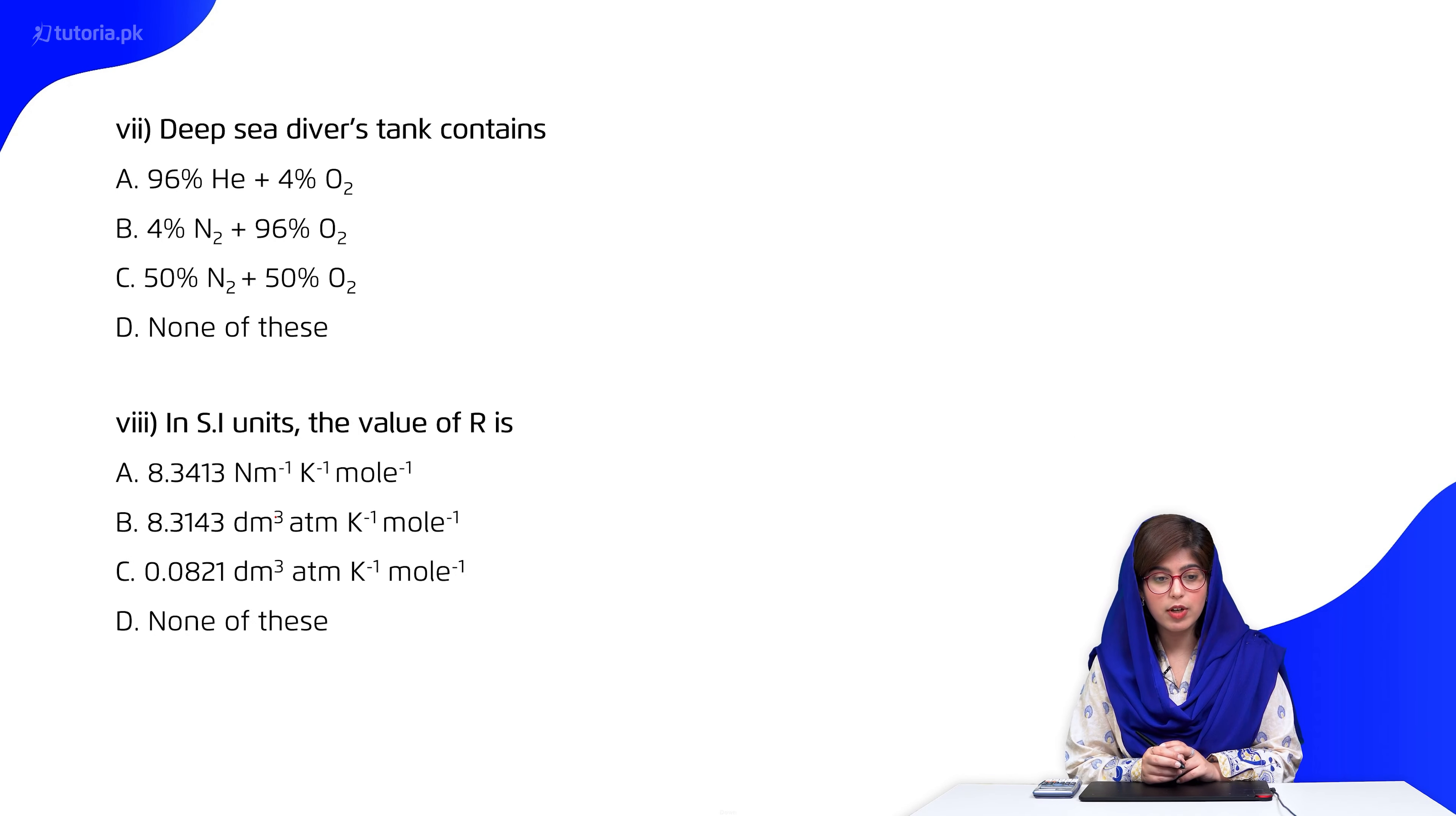Then students, moving forward, number 7. Deep sea diver's tank contains: A 96% helium plus 4% oxygen, B 4% nitrogen plus 96% oxygen, C 50% nitrogen and 50% oxygen, D none of these. So students, you know that inert gas can be in more proportion, that is A.